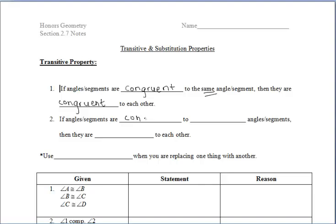Likewise, but a little bit more detailed: if angles or segments are congruent to congruent angles or segments, then they are congruent to each other. I know we're writing congruent about five times in that section, but it's very important for the transitive property.